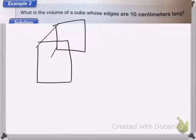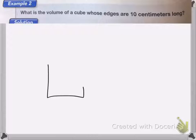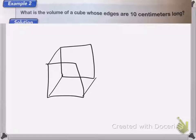So here we have what is the volume of a cube whose edges are 10 centimeters long? So if I was to draw this out, it would look like this. So I'd have my cube. Poorly drawn cube. Let's try that again. That's better. So I have my cube and it says that each edge is 10 centimeters long. And since it's a cube, I know that all the sides have to be 10 centimeters.